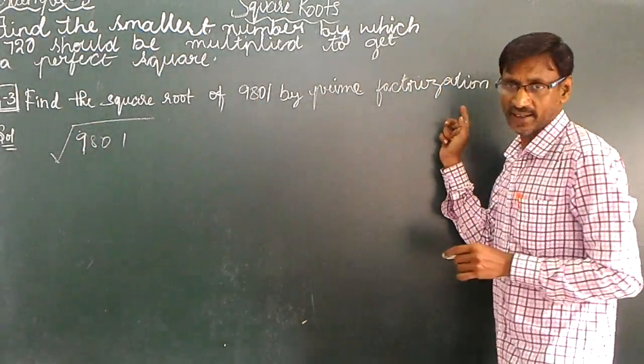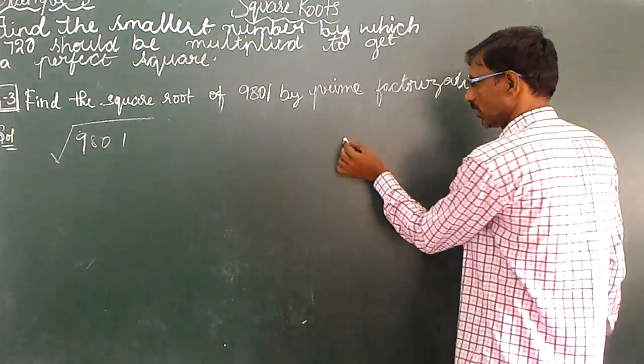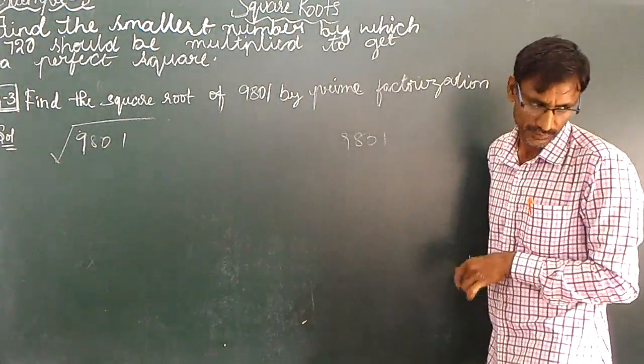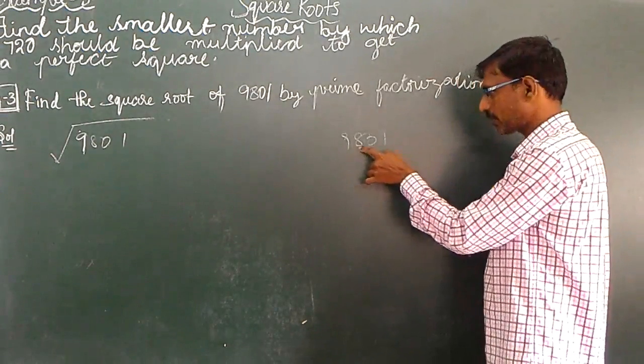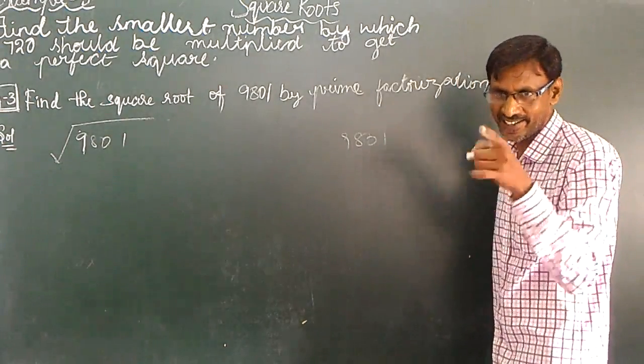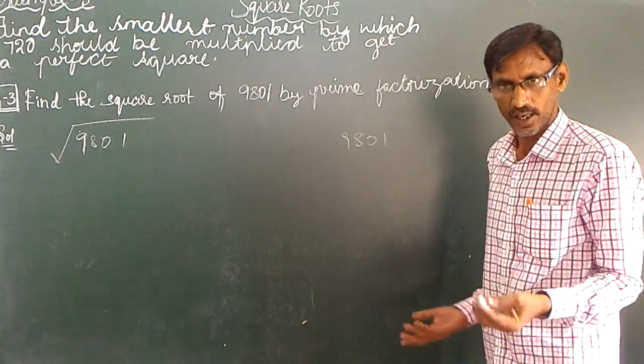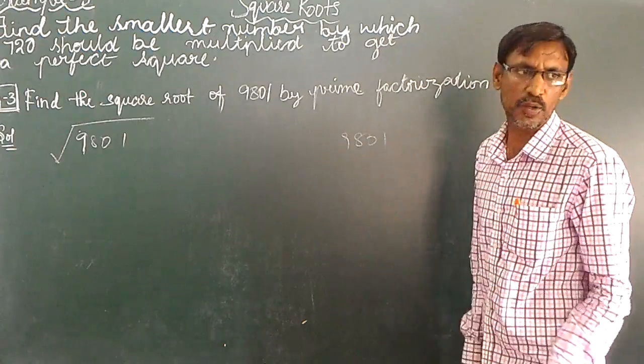By using characterization, primary characterization. 9801, correct? 9 plus 1 is 10, plus 8 is 18. 18 is divisible by 3. Therefore, total number divisible by 3.